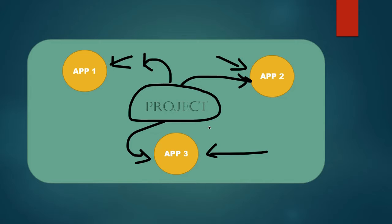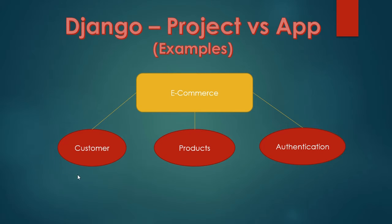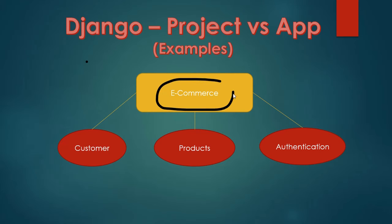Let's move on to an example to make things clearer. We have an e-commerce app here. As you know, amazon.com and flipkart.com are e-commerce applications, and each has various parts. What happens if you club everything into one single e-commerce app? Code changes become difficult — for example, if someone says you need to change the way products are displayed, you have to go into the e-commerce app, find the product code, and make the changes. That is a cumbersome process.